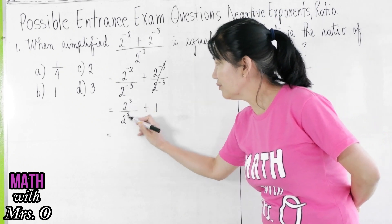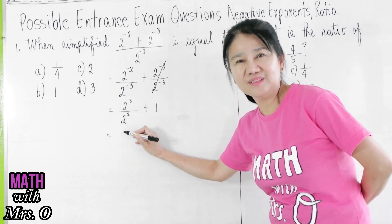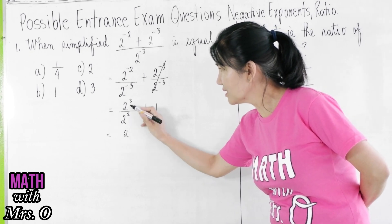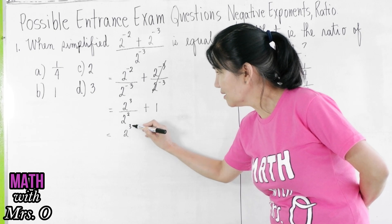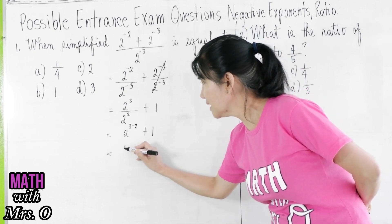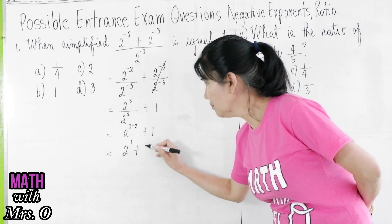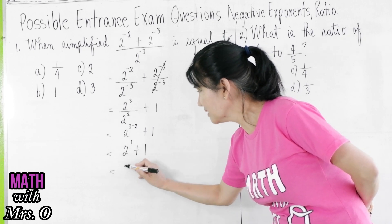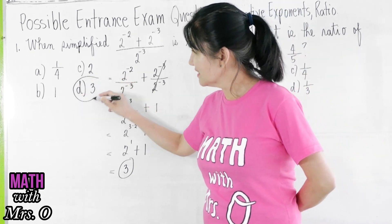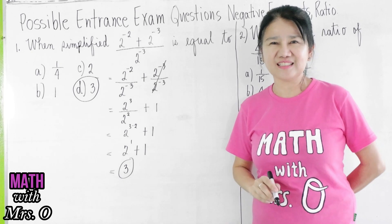Now, what is 2 cubed over 2 squared equal to? This is equal to 2. Why? Because this is 2 to the 3 minus 2 plus 1. So this is now 2 to the 1, or 2 plus 1 is equal to 3. Our final answer is 3. Correct answer is 3.